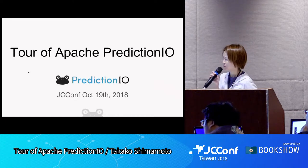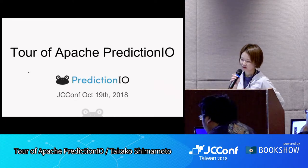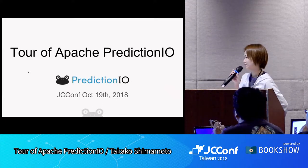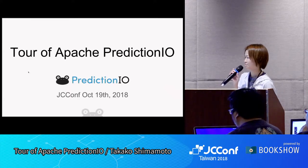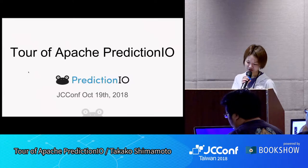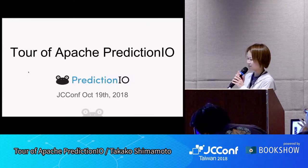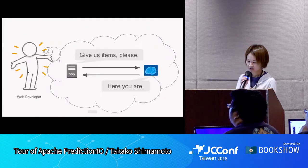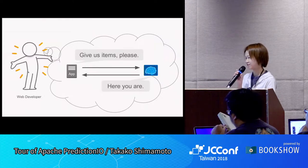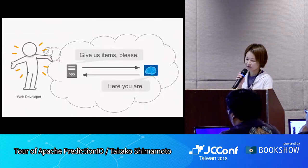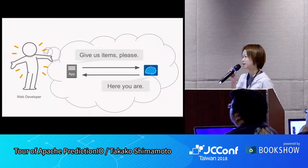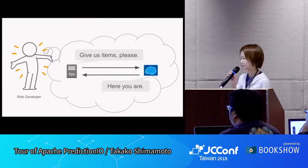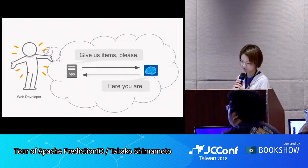I would be happy if everyone becomes a little interested in Apache PredictionIO. Okay, let's get started. Please try to imagine the situation: we'd like to recommend items that a user is likely to purchase.